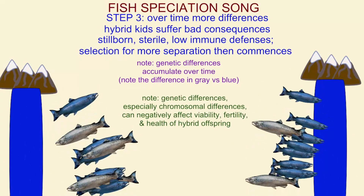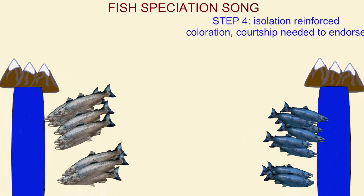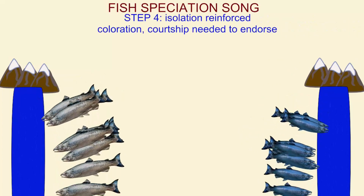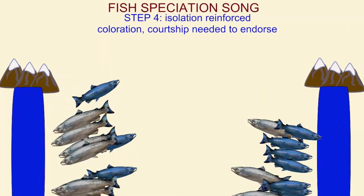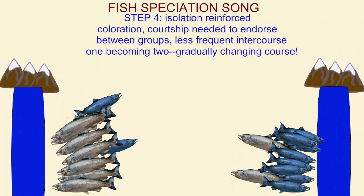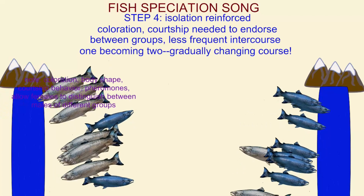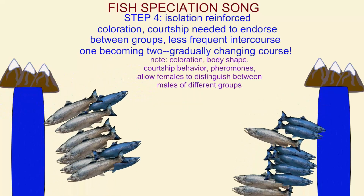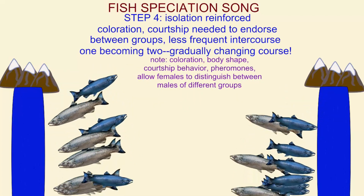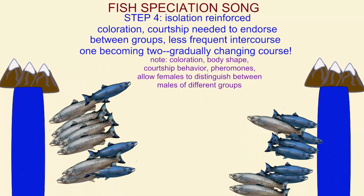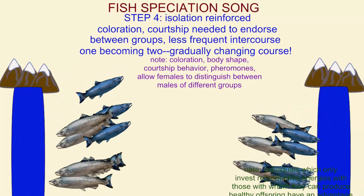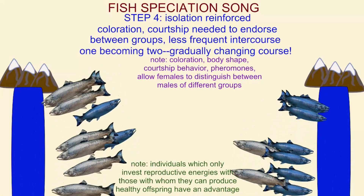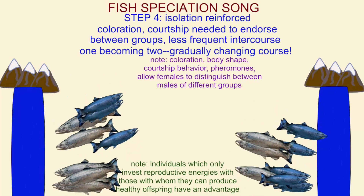Step four: isolation is reinforced; coloration and courtship are needed to endorse distinction between the two groups, with less frequent intercourse, one becoming two, gradually changing course.